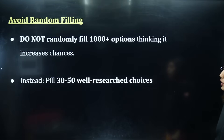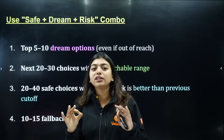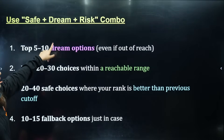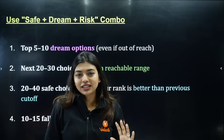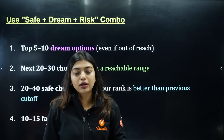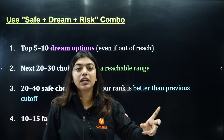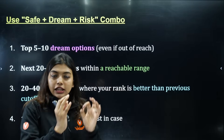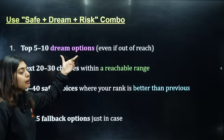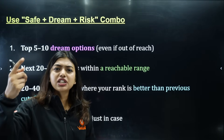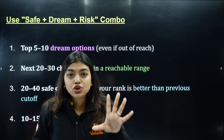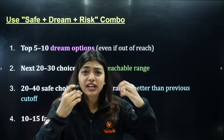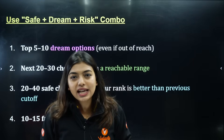Here is a very important tip that no one will tell you: use a safe plus dream plus risk combo. Like in the stock market — you keep some safe SIPs, some risky SIPs, and some dream investments. Similarly, in choice filling start with your top 5 to 10 dream options, even if they are out of reach. If you put just 5 dream choices, you still have 45 choices remaining.